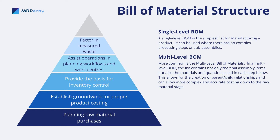More common is the multi-level bill of materials. In a multi-level bill of materials, the list contains not only the final assembly items but also the materials and quantities used in each step below. This allows for the creation of parent-child relationships and can allow more complex and accurate costing down to the raw material stage.